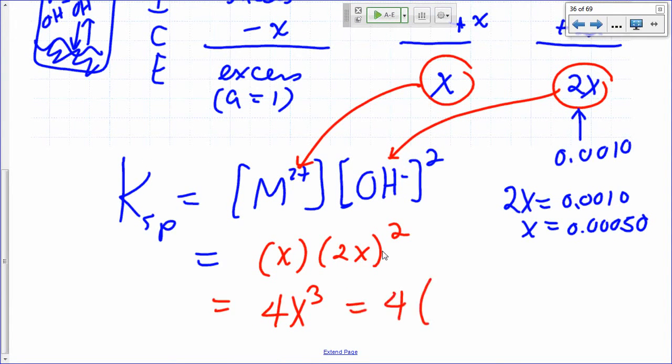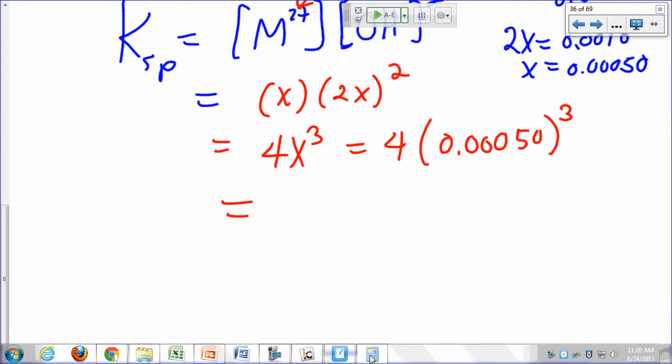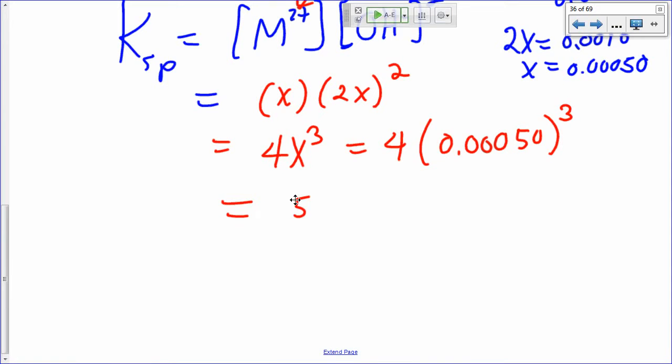So you just plug that in. You say that KSP is equal to 4 times (0.00050)³. And your KSP is equal to 0.0005 raised to the power 3, this is cubed, times 4. That's 5 times 10⁻¹⁰. So 5.0 times 10⁻¹⁰. That's how you solve for your KSP.